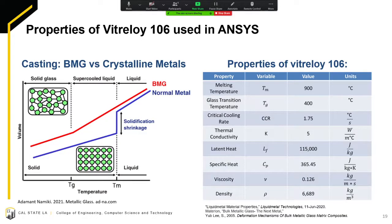On the left here, this graph discusses how normal metals shrink as they solidify and form crystalline structures. Bulk metallic glasses are great candidates for casting because they do not shrink as they solidify, they do not lose any volume, and they instead form glassy amorphous structures. On the right, this is the properties of Vitreloy 106, most notably our melting temperature at 900 degrees Celsius, our glass transition temperature at 400 degrees Celsius, which is a temperature where Vitreloy 106 solidifies and forms the amorphous structures, the critical cooling rate which is 1.75 degrees Celsius per second, and the latent heat of fusion which is 115,000 joules per kilogram, which is the amount of energy required to undergo the phase change from solid to liquid.